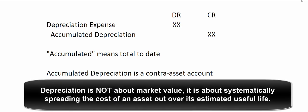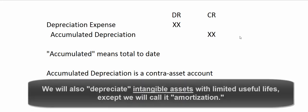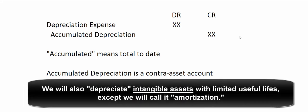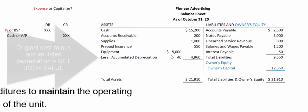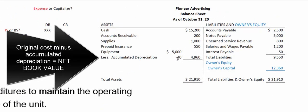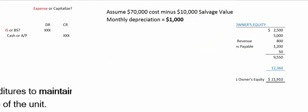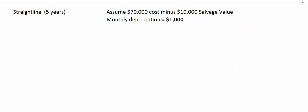We've got to spread the cost of those fixed assets out over their estimated useful life. The general entry for depreciation expense is: debit depreciation expense, credit accumulated depreciation. Accumulated means total to date, and accumulated depreciation is a contra-asset account — it hangs out with the assets and offsets the cost, telling the world how much of that cost we've written off so far. The key question is: how much, what's the dollar amount?